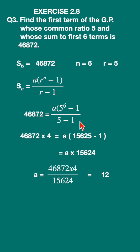5 minus 1 is 4. Take it on the left side: 46872 × 4 = a(5⁶ - 1) = a(15625 - 1) = a × 15624.